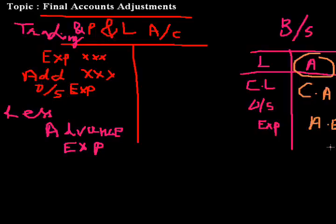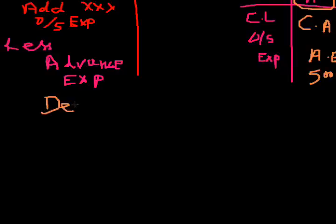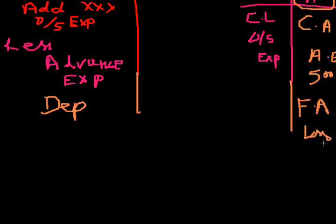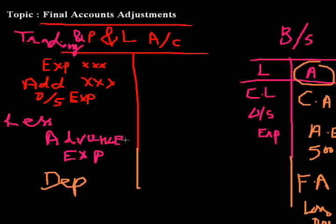Next, we will discuss the adjustment of depreciation. Depreciation is a loss of business, so it will go to the debit side of the profit and loss account. It will also be deducted from the particular fixed asset — like furniture, building, or machinery — on the basis of the straight-line method or the diminishing balance method.